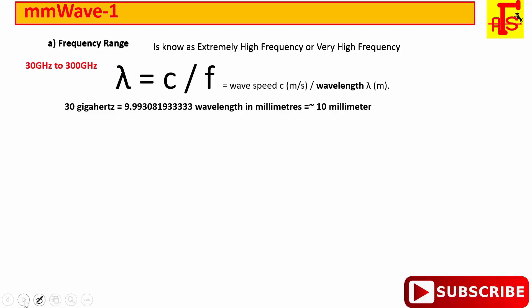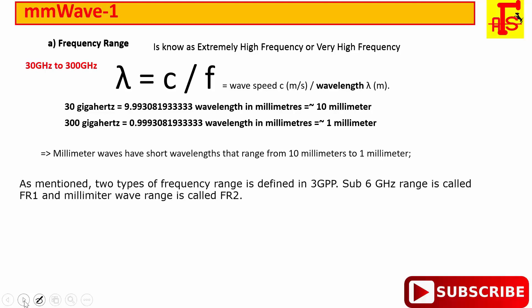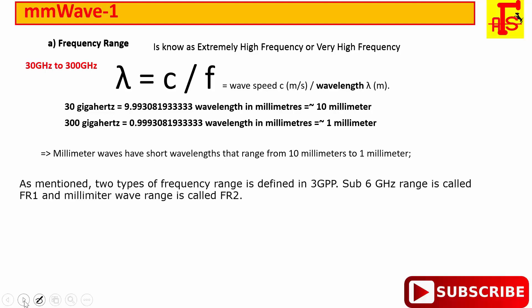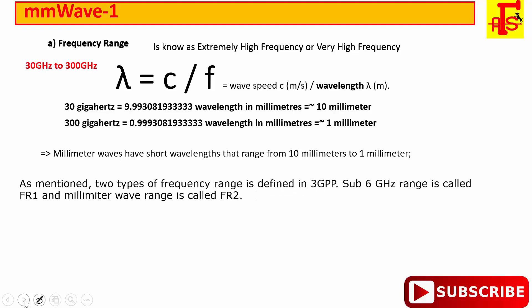Millimeter wave is the band of spectrum between 30 GHz to 300 GHz. If you convert 30 GHz, it equals approximately 10 millimeters, and 300 GHz equals approximately 1 millimeter. So millimeter waves have short wavelengths ranging from 10 mm to 1 mm. A 5G signal uses wavelengths measured in millimeters, which is why 5G is considered millimeter wave technology.